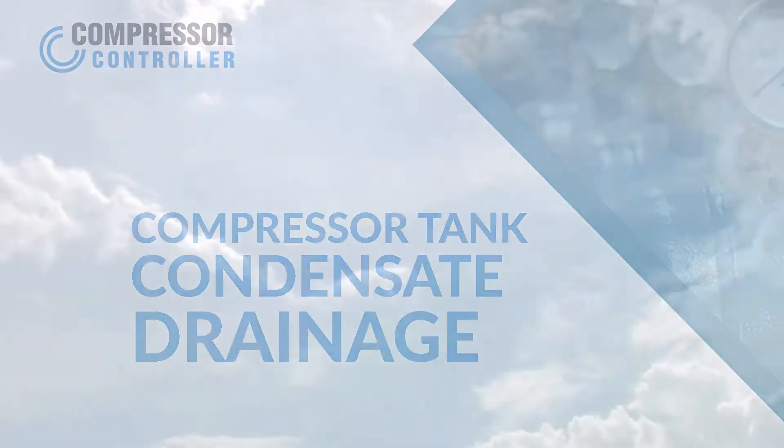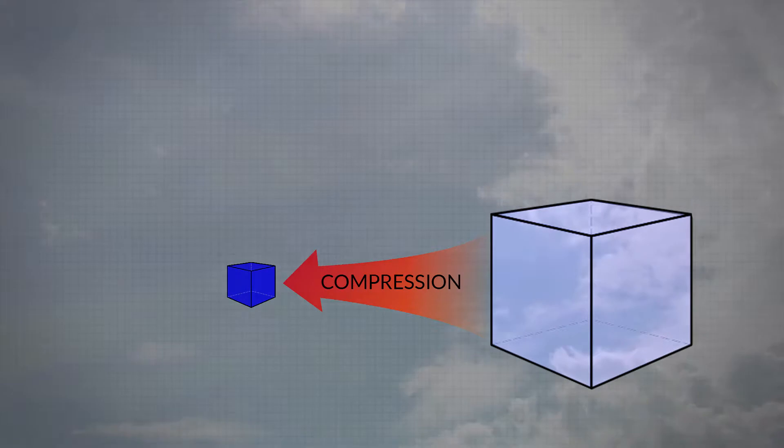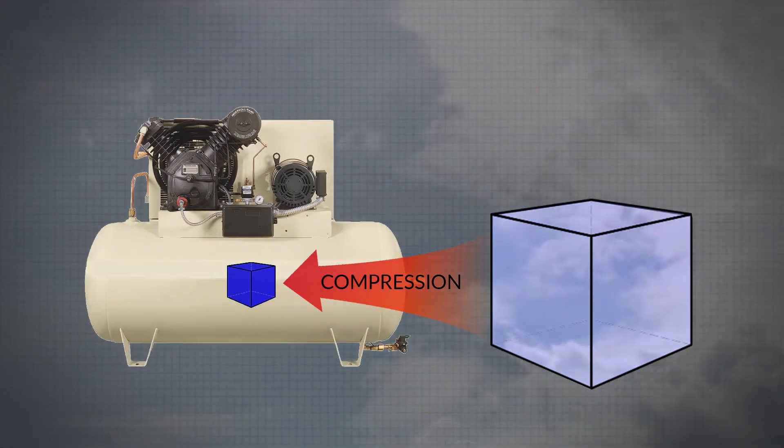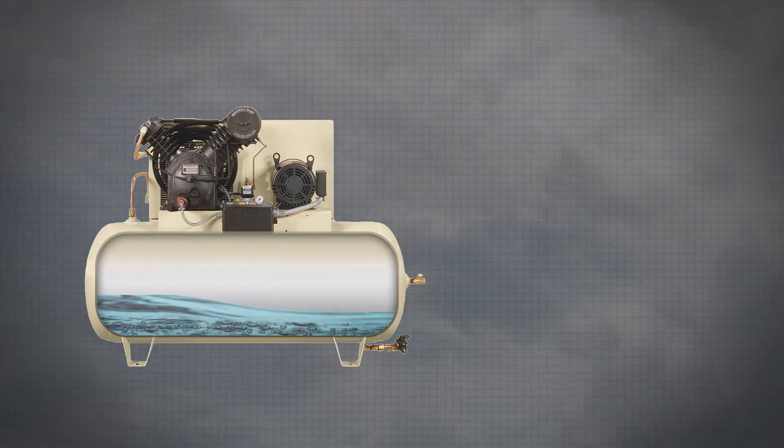Air naturally contains humidity and when air is compressed, it transfers that moisture into the expansion tank. As the compressed air is cooled, condensation collects in the bottom of the tank and must be removed.